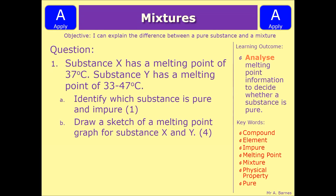Let's have a look at a couple of questions. If you had a question like this in the exam which goes: substance X has a melting point of 37 degrees and substance Y has a melting point of 33 to 47 degrees. Part A: identify which substance is pure and impure. Part B: draw a sketch of a melting point graph for substance X and Y. Have a go at doing them by pausing this video.